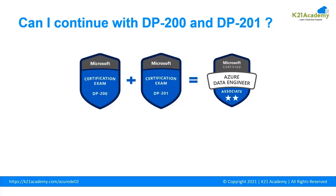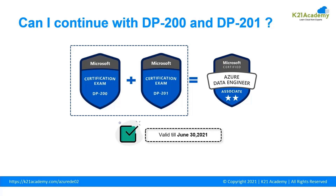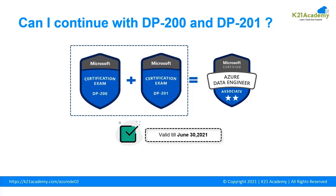You might have a question: can I continue with DP200 and DP201? Yes, you can still consider taking those exams. They are still valid and available to sit until June 30th, 2021. So if you are already preparing or have already given one of these exams, there is no point to stop. I would suggest you continue and finish DP200 and DP201 and then take your Azure Data Engineer certificate.